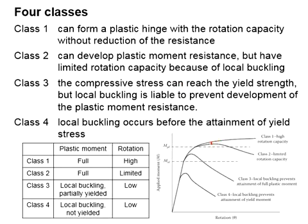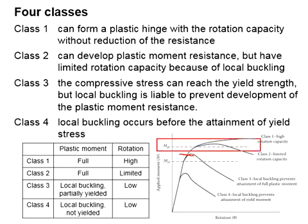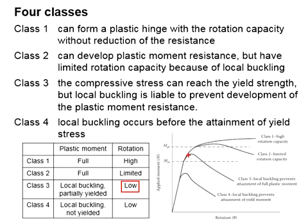In principle, the ultimate capacity of class two is slightly lower than the ultimate capacity of class one. As far as the design is concerned, we are designing for the plastic moment. Therefore, both can be applicable for design as both are higher than the design moment. Class three undergoes yielding at the compression part in the form of local buckling, which happens before the plastic moment occurs. In general terms, it is considered partially yielded and has a very low degree of ductility.